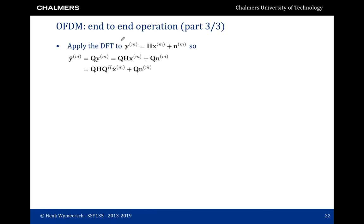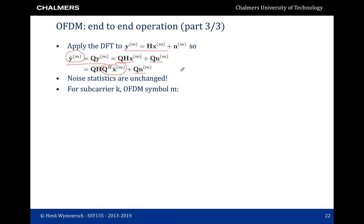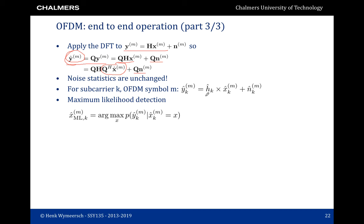The receiver applies a discrete Fourier transform to the observation. We apply the DFT to both the signal part and the noise part. The signal part was given by an inverse Fourier transform times the QAM data symbols x-hat_M. The noise statistics are unchanged because the unitary transformation does not affect noise statistics. So for subcarrier k, entry k in the vector Y-hat of OFDM symbol M is simply equal to the Fourier transform of the channel times the transmitted QAM symbol plus noise. We no longer have inter-symbol interference, and we can use channel-by-channel maximum likelihood detection.